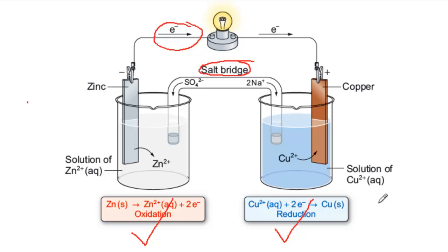Here's the explanation. As current is drawn from the cell, Zn2+ ions build up in the left-hand half cell, and this leads to a build-up of positive charge. In the right-hand half cell, Cu2+ ions are removed, and this means a build-up of negative charge, say from the sulfate ions if the solution is copper sulfate.